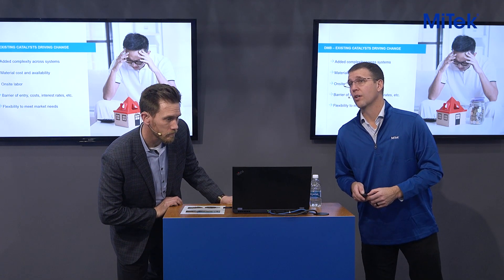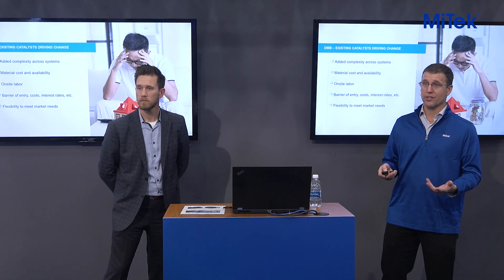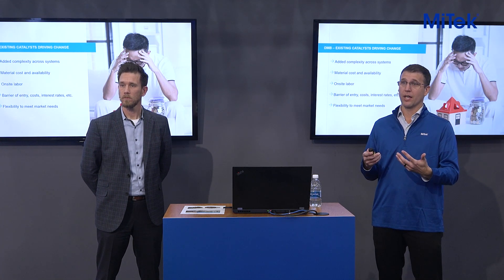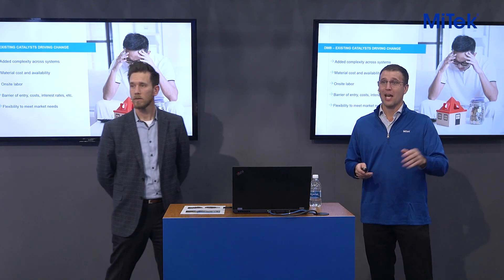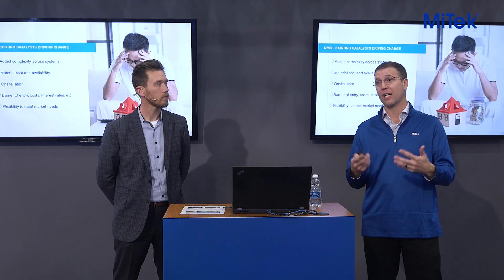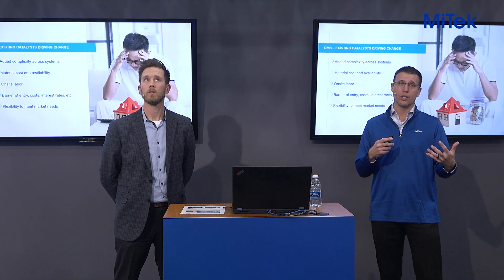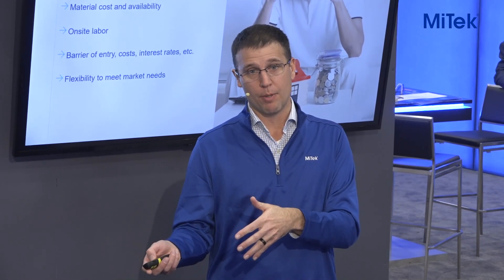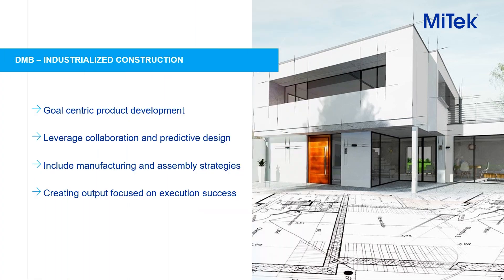The barrier of entry is tied back to cost from an affordability standpoint — how are people actually able to get the housing they need? Shelter is a primary need, and sometimes there are barriers based on historical methods. The question in this session is: knowing what components you're trying to take advantage of downstream, how does designing that product up front help lower that barrier of entry?